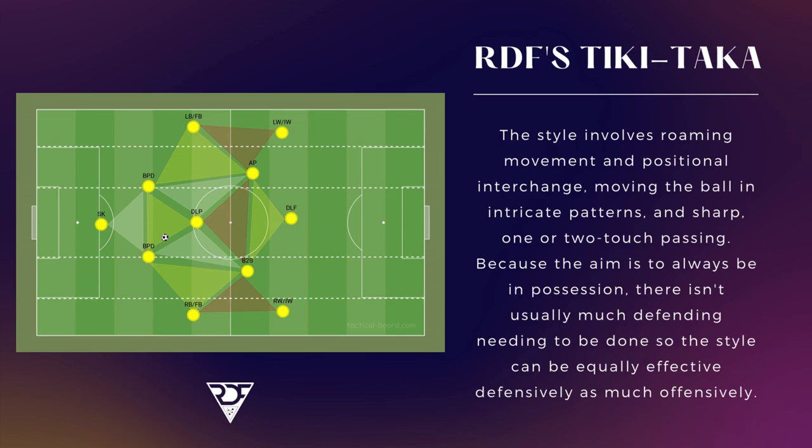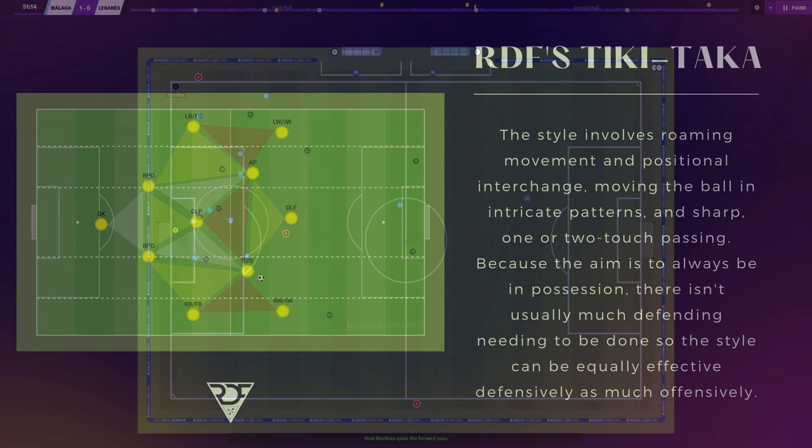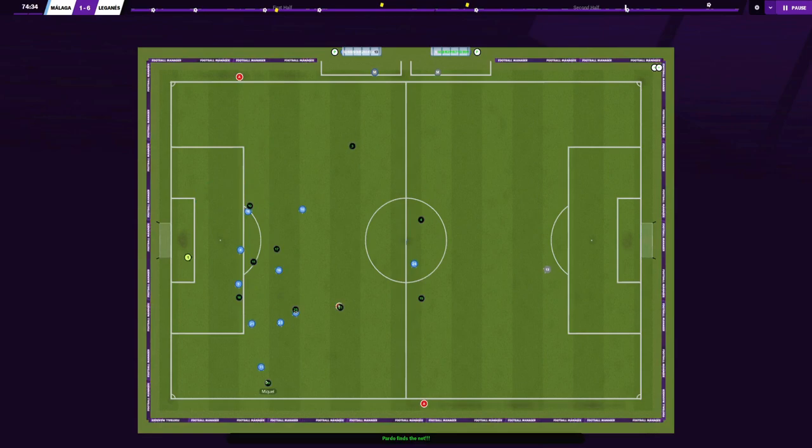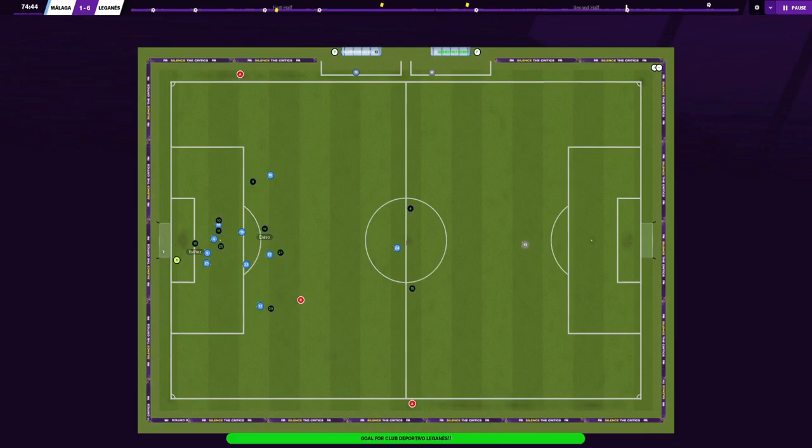The style involves roaming movement and positional interchange, moving the ball in intricate patterns and sharp one or two touch passing. Because the aim is to always be in possession, there isn't usually much defending needed, so the style can be equally effective defensively as offensively. In possession, you want to stretch the opponents by making the pitch as wide as possible, and when the ball is lost, the team narrows their shape to make the pitch seem very small for the opponents.